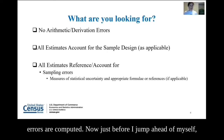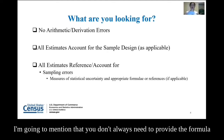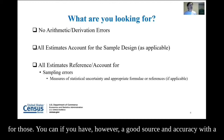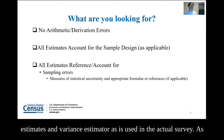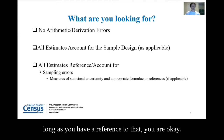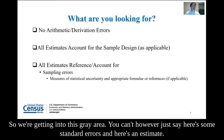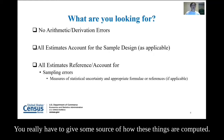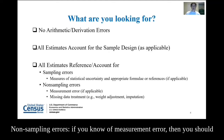You don't always need to provide the formula for those. If you have a good source and accuracy with a methodology statement, and you're using the same variance estimates and variance estimator as is used in the actual survey, as long as you have a reference to that, you are okay. You can't, however, just say here's some standard errors and here's an estimate — you really have to give some source of how these things are computed.